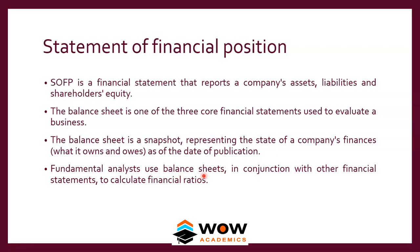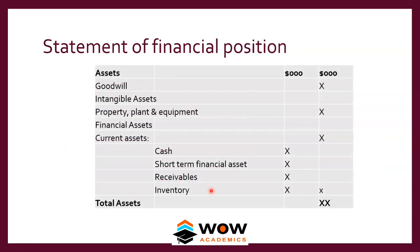Fundamental analysts use balance sheets in conjunction with other financial statements to calculate financial ratios. The SOFP is very useful — based on it we can analyze how strong a company is, how much assets it has, and whether the company would be able to repay its debt. The typical SOFP format starts with goodwill, then intangible assets, property, plant and equipment, financial assets, and current assets — with current assets ordered as: cash, short-term financial assets, receivables, and inventories.